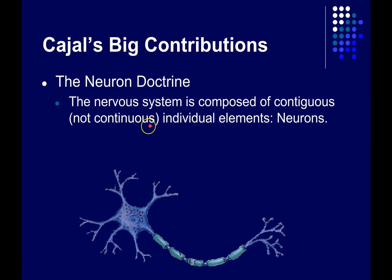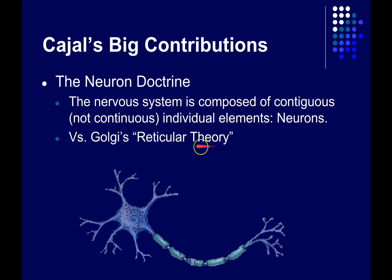Others, however, including Camillo Golgi, who developed the Golgi stain, saw a reticulum. Golgi proposed what he called a reticular theory — that there was a web in the brain, lots of interconnecting filaments all part of one large network, as opposed to individual discrete elements. It turns out Cajal was right: the nervous system and the rest of the body is composed of individual cells we now call neurons.